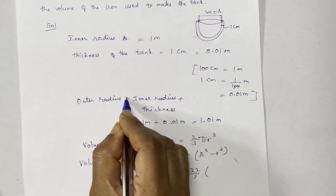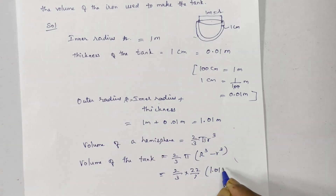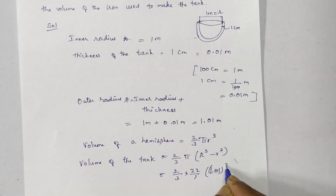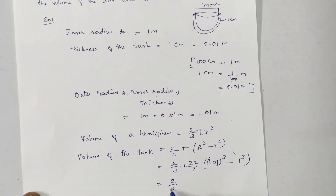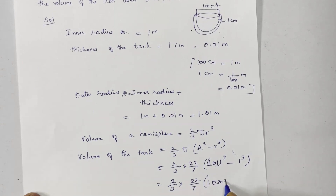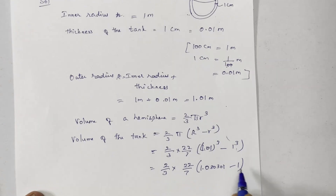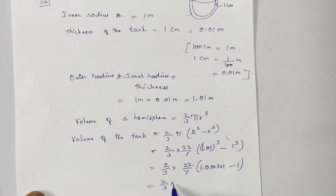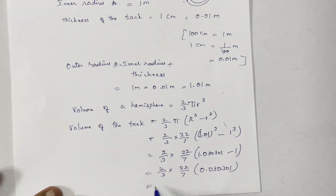Capital R is the outer radius, 1.01. So we calculate 1.01 cubed minus 1 cubed. That is 2 by 3 into 22 by 7. The value of 1.01 cubed is 1.030301. Subtracting 1 gives 0.030301.